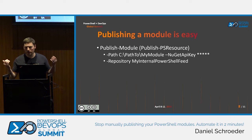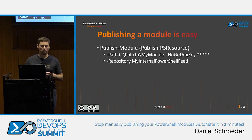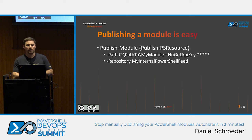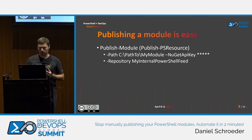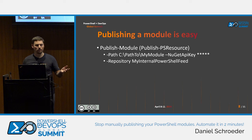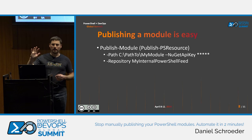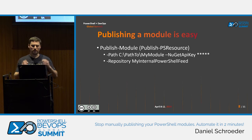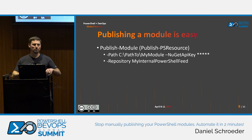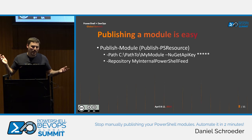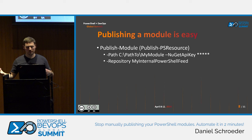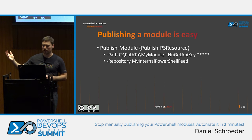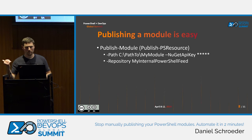Turning your script into a module is pretty trivial — you change the file name from .ps1 to .psm1 and add a .psd1 manifest. Publishing it is also easy. Show of hands: who here has published a module before? About half the room. And how many of you just type the Publish-Module command in the terminal every time? It's easy — you provide the path to your module directory and your PowerShell Gallery API key.